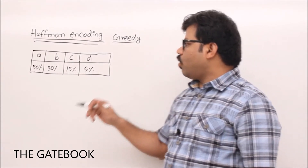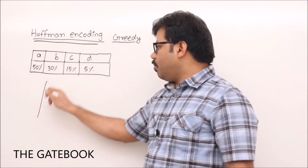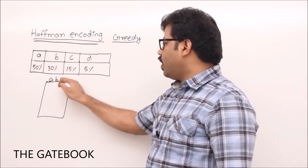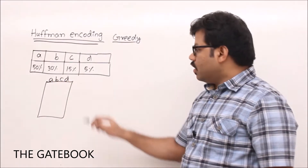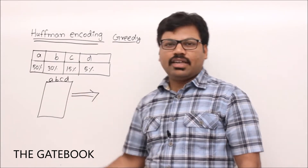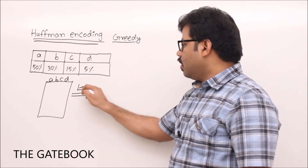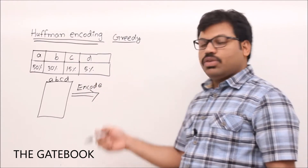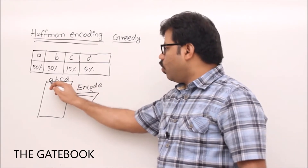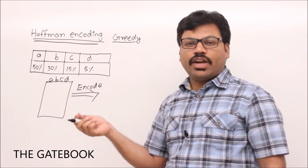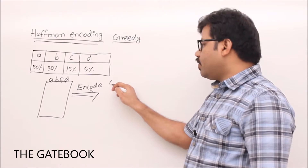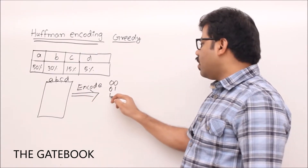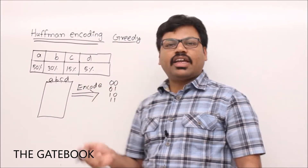Huffman encoding is all about compressing a message. Let's say you have a message with some characters — just a, b, c, d. Generally, when we represent messages with characters, we encode them using binary bits. With four characters, two bits are sufficient: a = 00, b = 01, c = 10, d = 11.